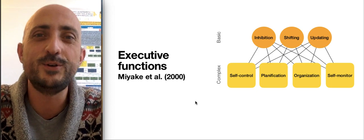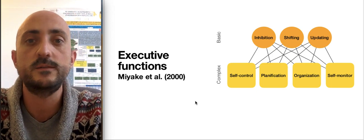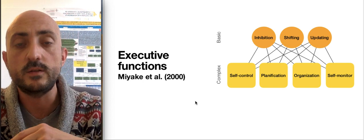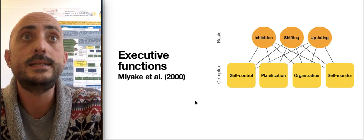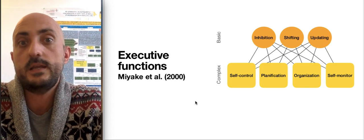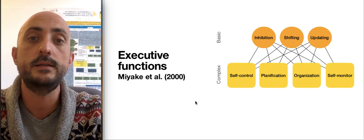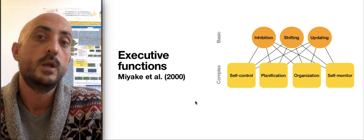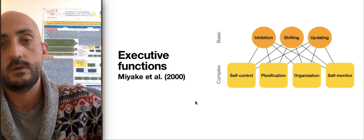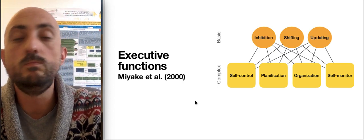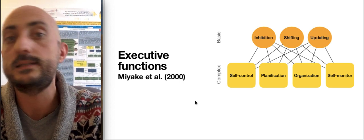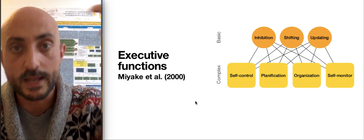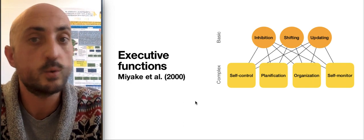And then updating, that is the capacity of the working memory to forget the stimuli that is not useful in our memory and replace this with something new that is useful. For example, when we must memorize a telephone number and we have no choice but to write it down, and the person that is talking with us makes a mistake with any number, and we have to replace the wrong number for another new one.